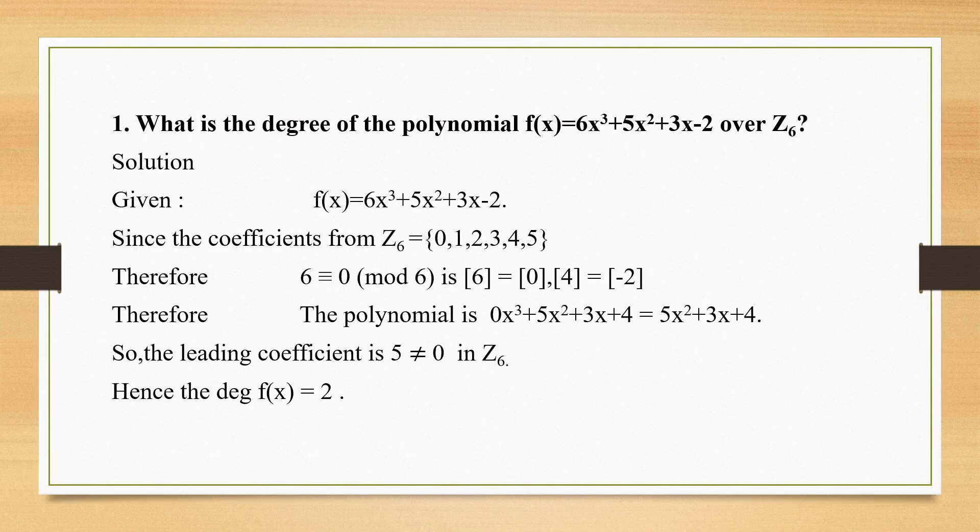Let's move on to the problems. The first problem: what is the degree of the polynomial f(x) = 6x³ + 5x² + 3x - 2 over Z6? If Z6 is not given, you could clearly say that the degree of this polynomial is 3 — because of the highest degree term, that is the variable which has the highest power, which is 3.